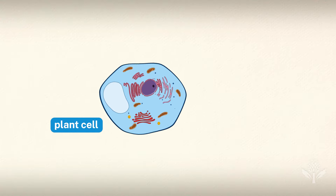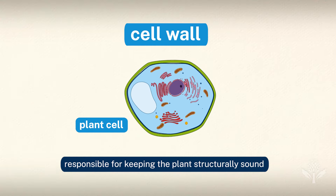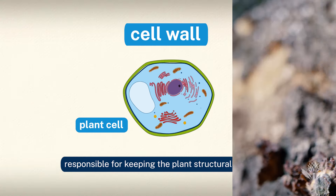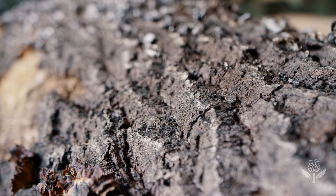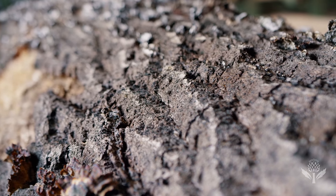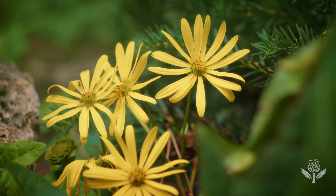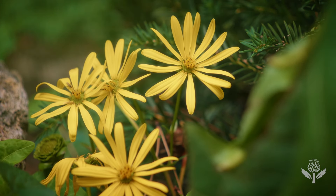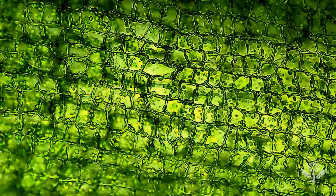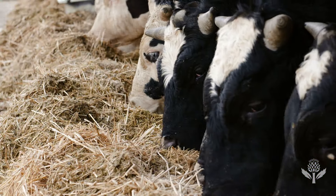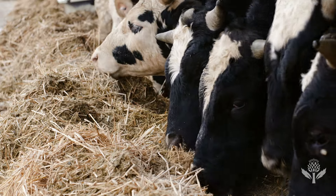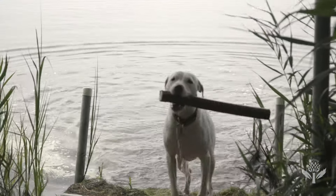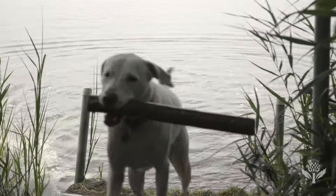Unique to plant cells is a cell wall that's responsible for keeping the plants structurally sound. Without it, tree trunks wouldn't have the rigidity that allows them to grow tall, and flower stems wouldn't have the strength to carry the weight of their blossoms. The cell wall is composed of cellulose, which is food for herbivores, including cows and horses. If animal cells had cell walls, it would be impossible for animals to move.